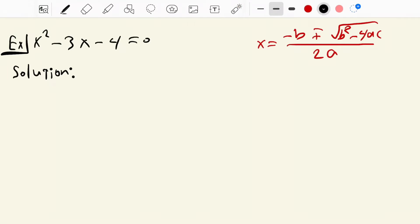We know that a is the coefficient of x squared which is 1, and b equal to coefficient of x which is minus 3, and c equal to this constant which is negative 4.